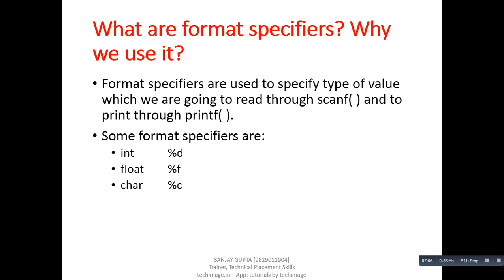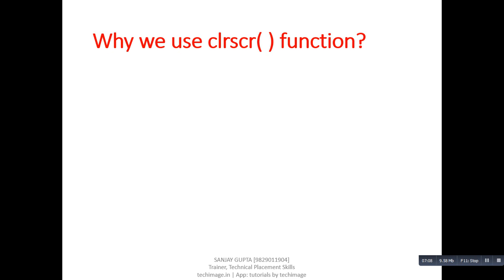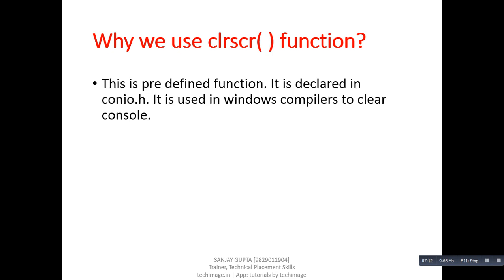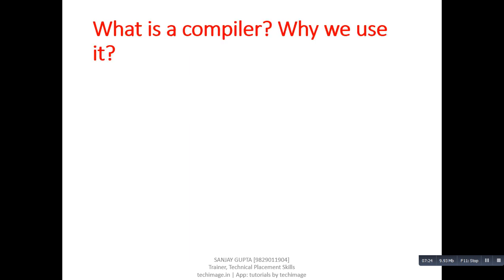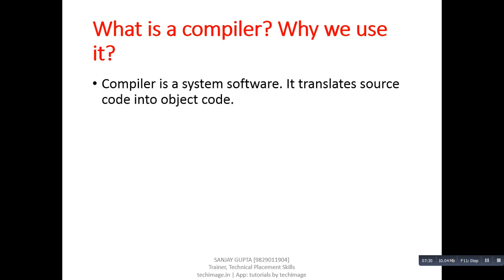Next question: why we use the clrscr function? Answer: clrscr is a predefined function, it is declared in conio.h, it is used in Windows compilers to clear the console. Next question: what is a compiler and why we use it? Answer: a compiler is a system software; it translates source code into object code.